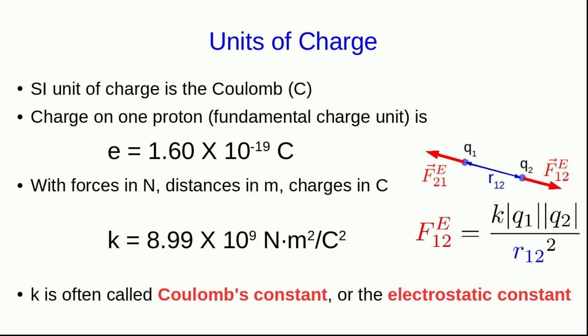k, the constant, is often called Coulomb's constant, but it goes by a variety of other names. It's also called the electrostatic constant or the Coulomb's law constant. I'll tend to just call it k.